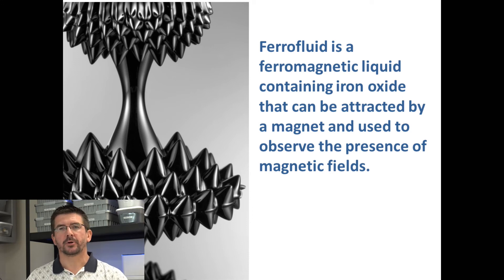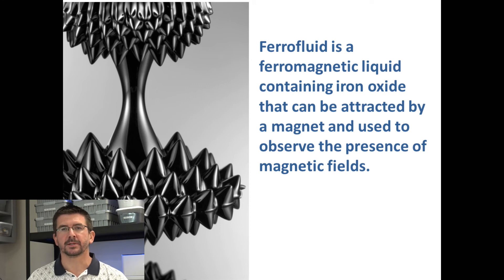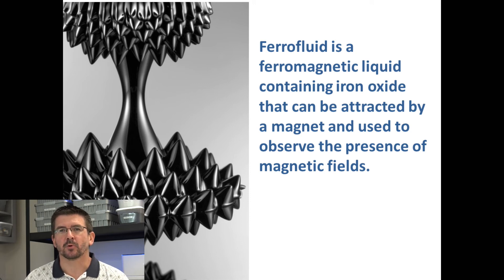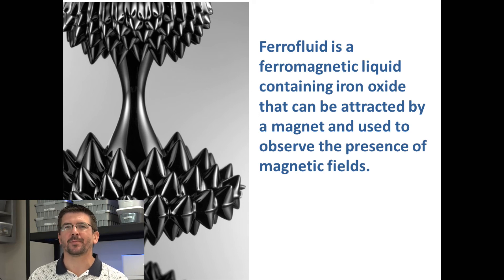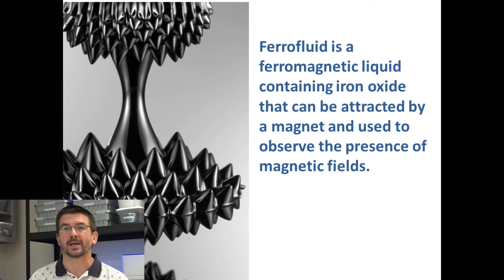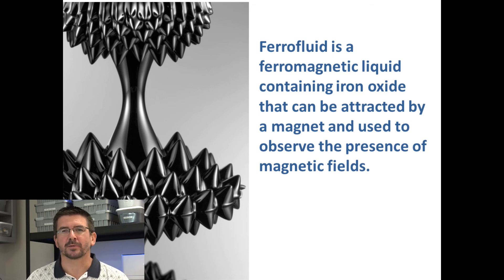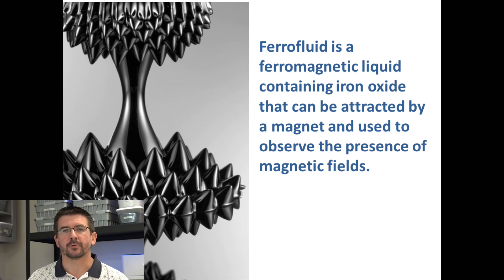At this point, we've talked about two of the different characteristics of magnets. We've talked about ferromagnetic materials, and we've talked about magnetic fields — how they're formed and how we can detect and recognize them. In our next lesson, we'll be talking about the third property, which is magnetic attraction and repulsion. After that, we'll be doing more activities, making magnets, and looking at different ways we can create magnetic domains and magnetic fields.